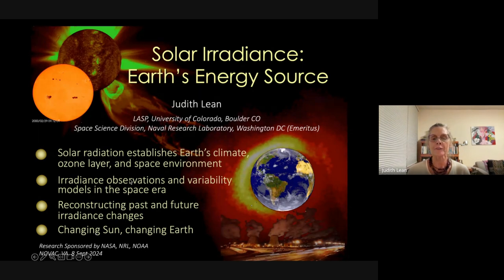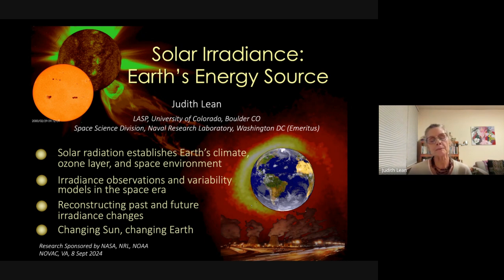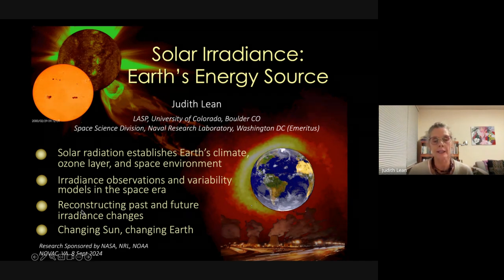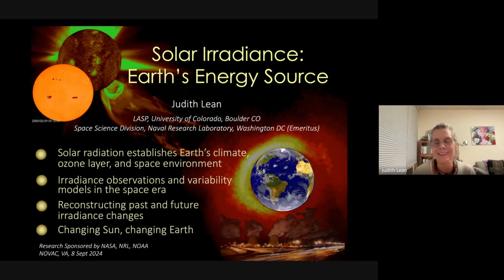Those few tenths of a percent are actually really important for understanding the earth and how it varies. I'm going to start by showing how the sun's radiation is the dominant source of energy for the earth and how it literally establishes the earth's environment — including the surface temperature, the atmosphere, the ozone layer, and the space environment where satellites orbit.